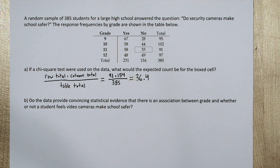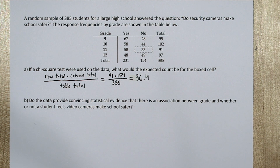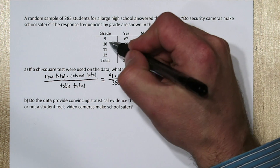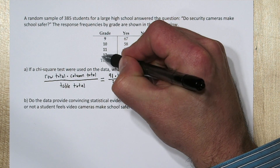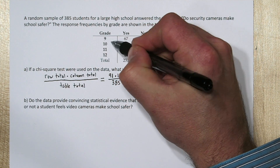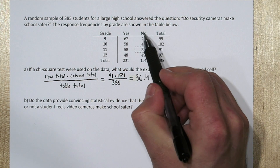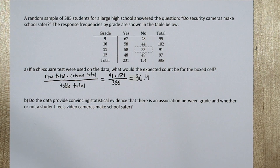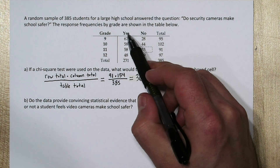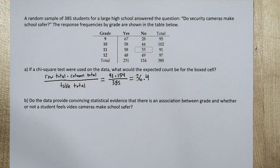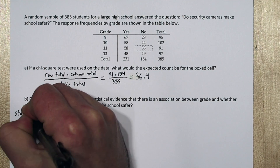For part B, we're going to perform a chi-square test for association. This type of test works when you have two variables that are both qualitative or categorical variables. Grade is a categorical variable with four different values, and the response to this question is another categorical variable — it can either be yes or no. Let's use the four-step process.